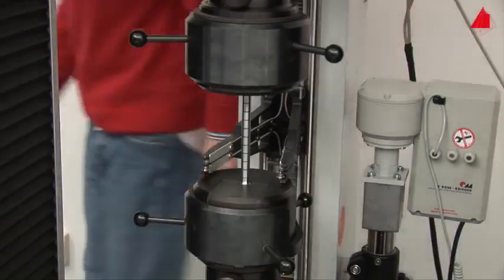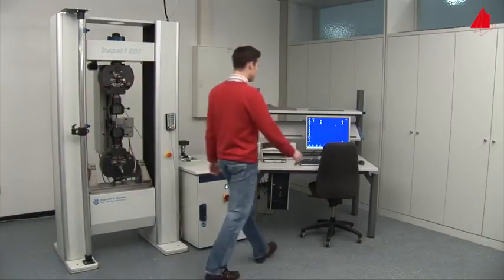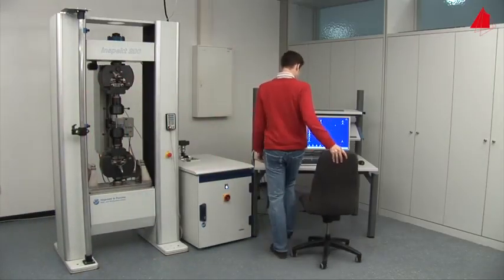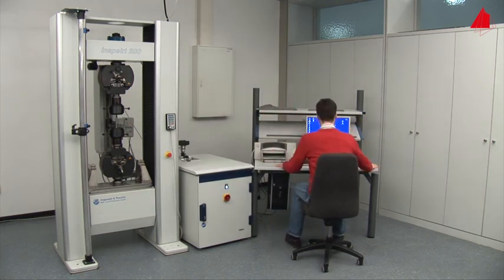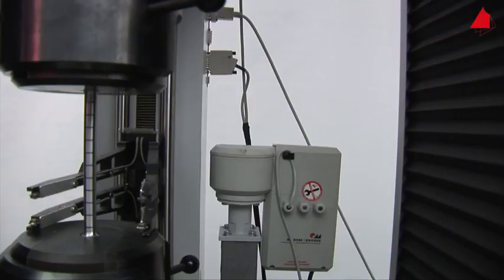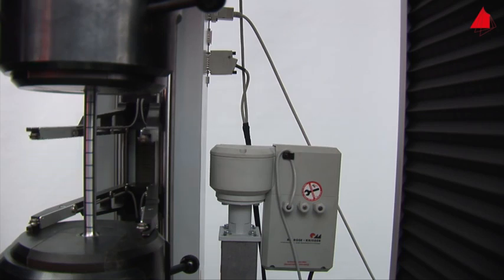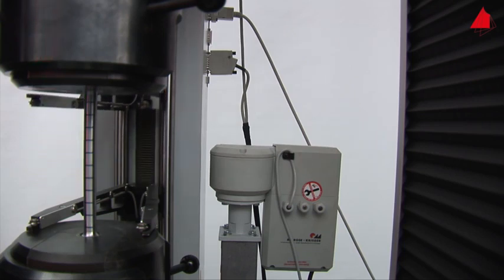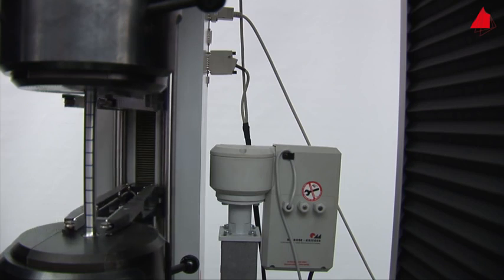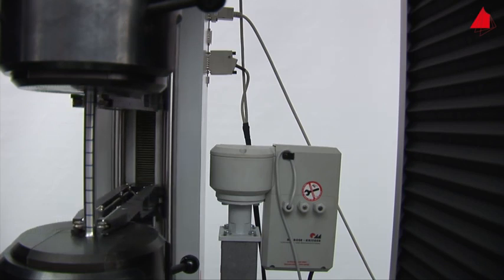Then he selects all necessary testing parameters on the control computer. Ready, the test starts, and the extensometer sensor arms are carefully pressed onto the test piece. This way the gauge length can be measured throughout the whole tensile test.